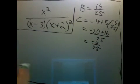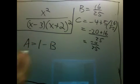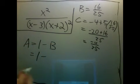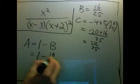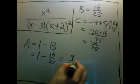And if you'll recall, a was 1 minus b, so a is 1 minus 16 over 25, which is 9 over 25.